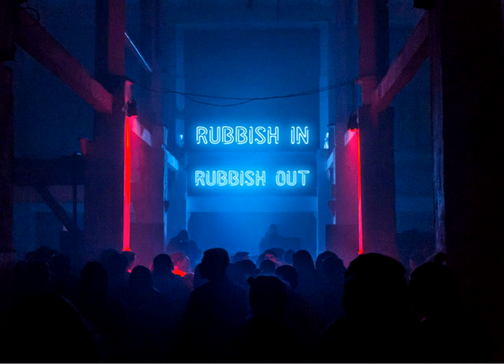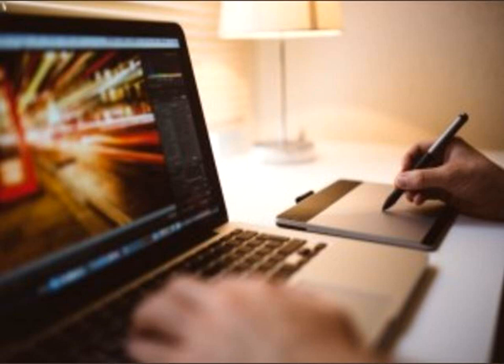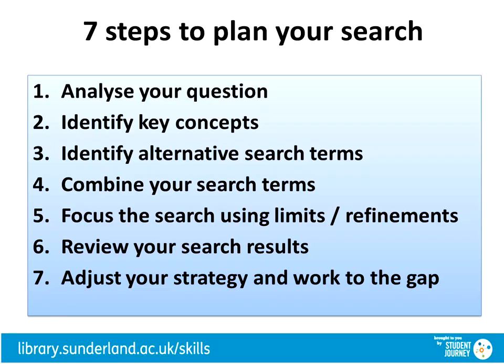Being too general or too specific will yield bad results. This is mostly aimed at searching for journal literature and information on the internet, where the volume and complexity of the material means you must be more focused in your searching. The seven steps to plan your search helps break down the process into smaller steps. We will cover steps one to four in this video, and steps five to seven are covered in videos on searching for e-journals.